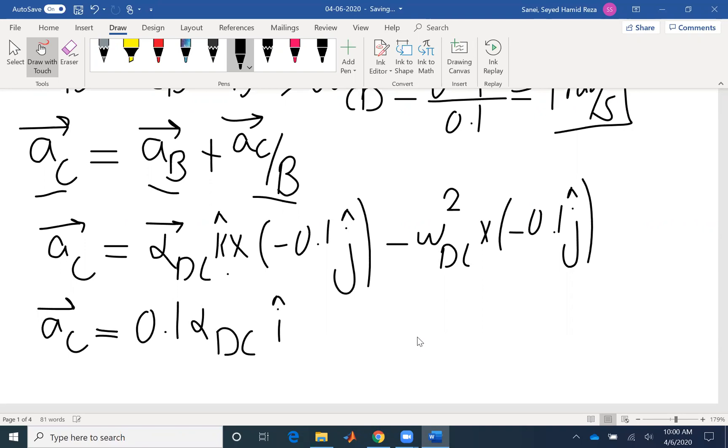16 times 0.1 would be 1.6. This is just simple multiplication, not a cross product because omega DC squared is not a vector. I have negative negative, so it would be positive 1.6 j. That's AC that I have.